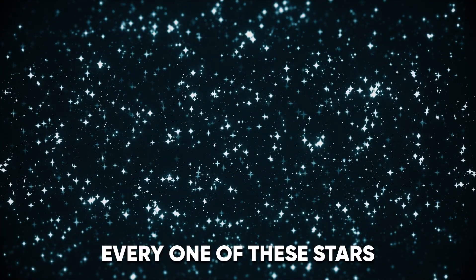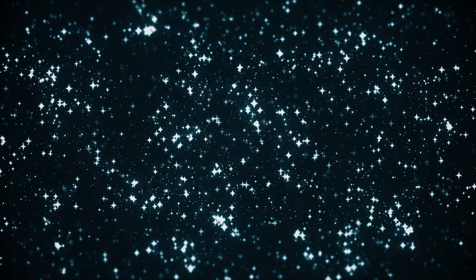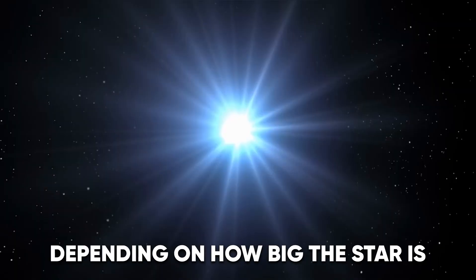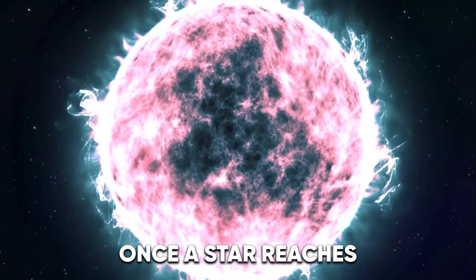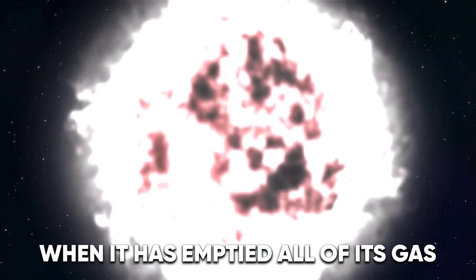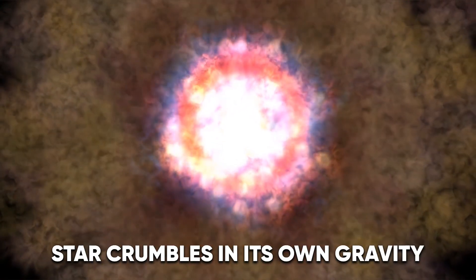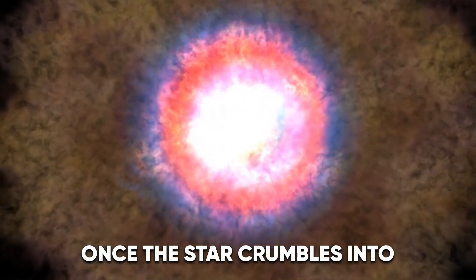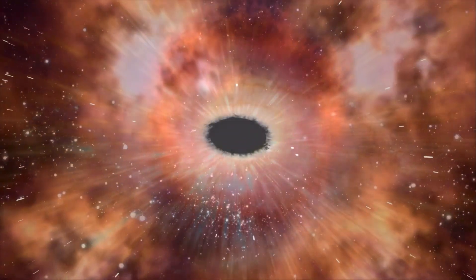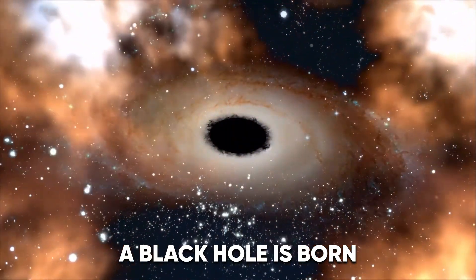Every one of these stars, just like our sun, has its own lifespan depending on how big the star is. Once a star reaches the end of its lifetime, when it has emptied all of its gas, it will cause a massive implosion called a supernova as the star crumbles in its own gravity. Once the star crumbles into an incredibly dense singularity, a black hole is born.